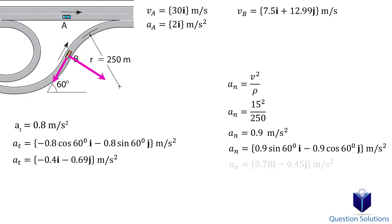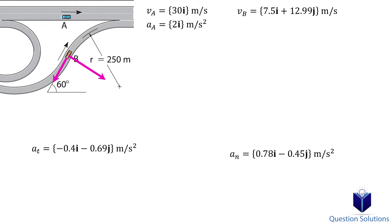Let's simplify these. The total acceleration of car B is the addition of all of these components. Let's add the components together.